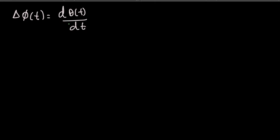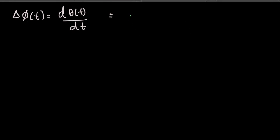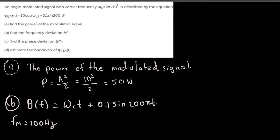We know θ(t) = ω_c·t + 0.1·sin(205t). Taking the derivative with respect to t: the derivative of ω_c·t is ω_c, and the derivative of 0.1·sin(205t) uses the chain rule — the sine becomes cosine and we multiply by the inside derivative 205, giving 205×0.1 = 25. So dθ/dt = ω_c + 25·cos(205t).